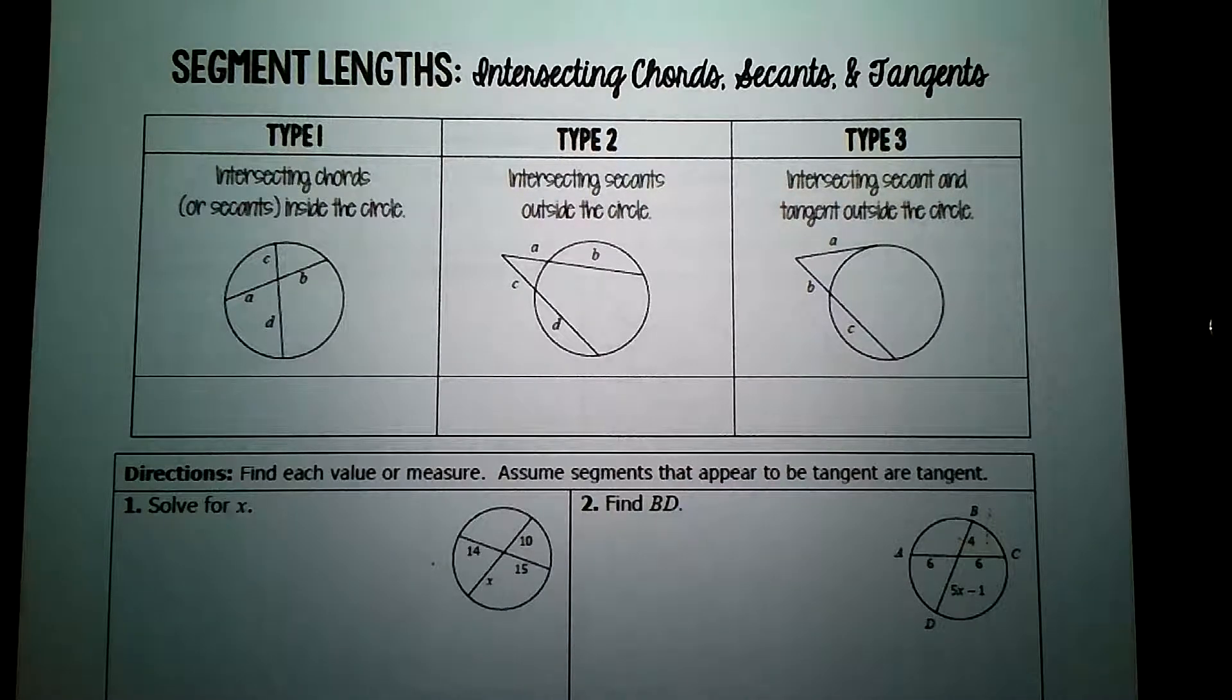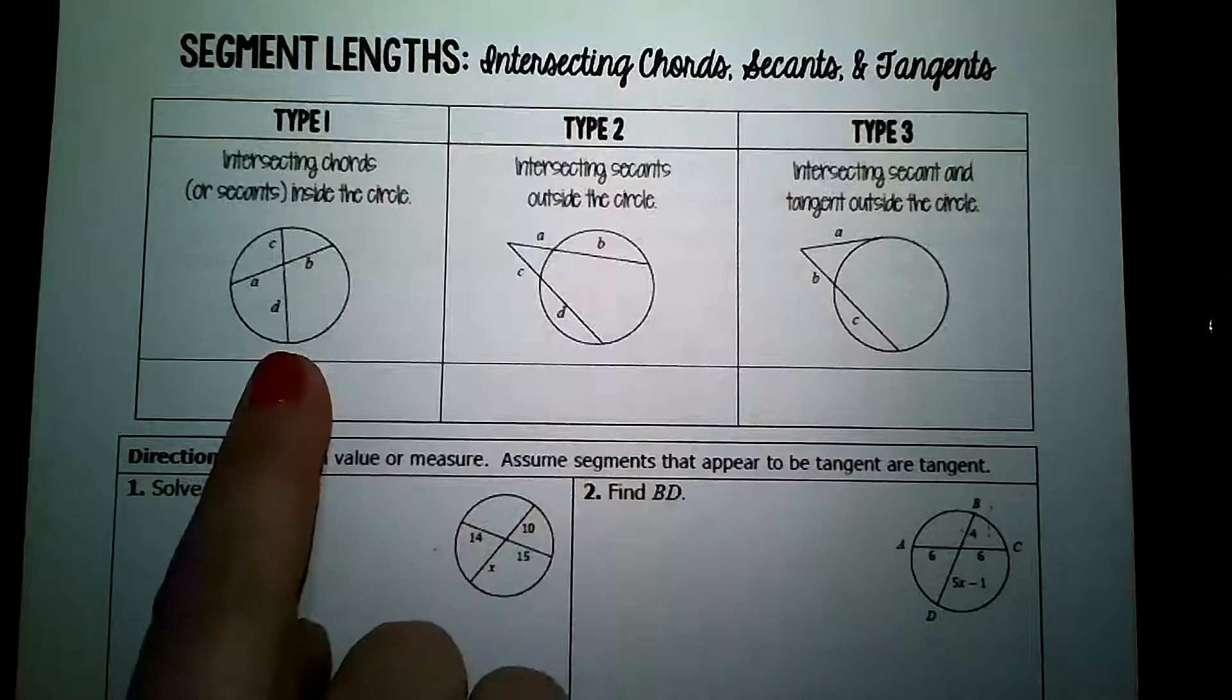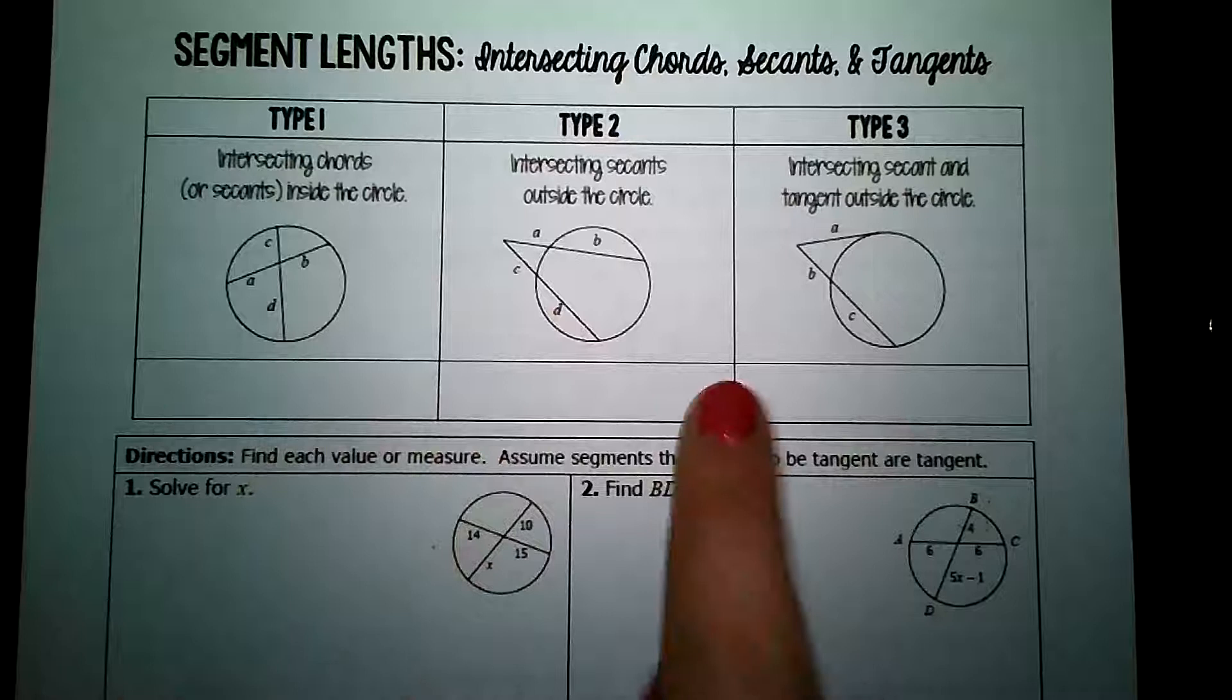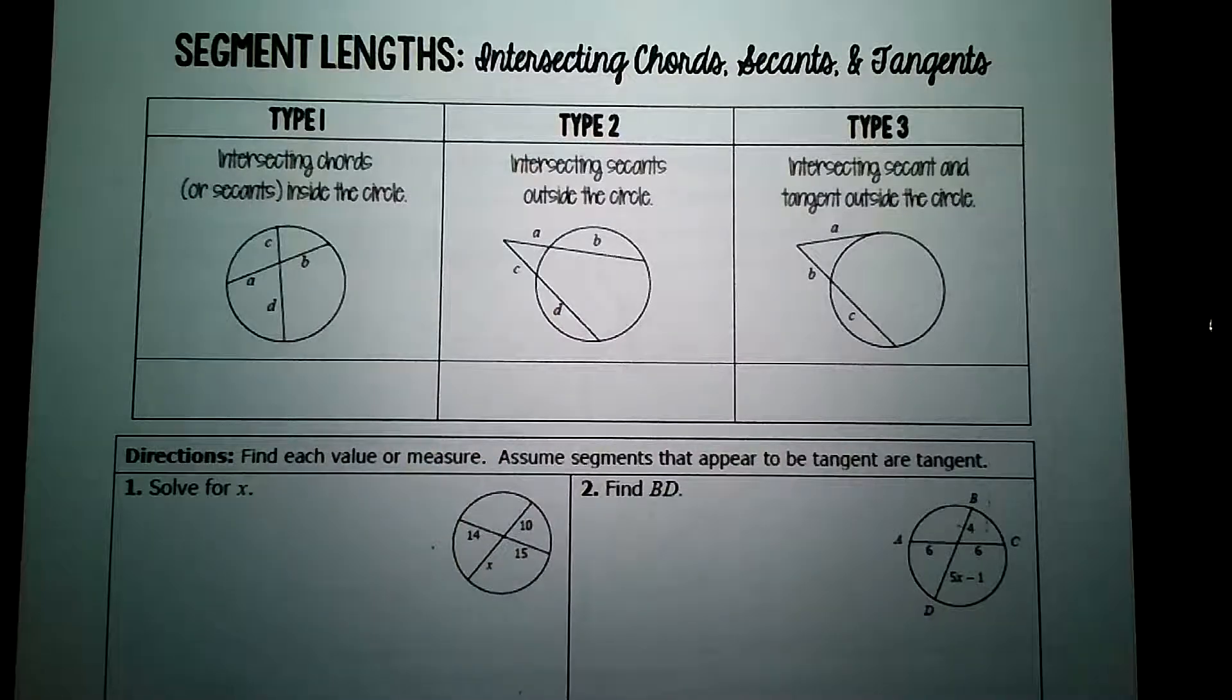We're looking at the segment measurements of intersecting chords, secants, and tangents. So you're seeing three different opportunities here, and unfortunately, the formulas are all different for all three. Okay, let's start over here.